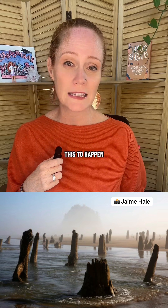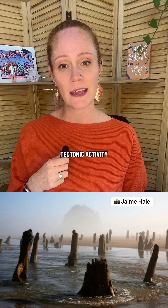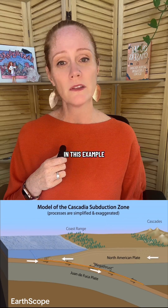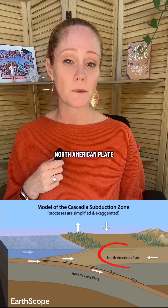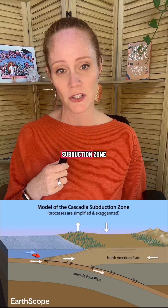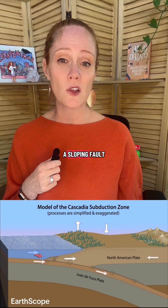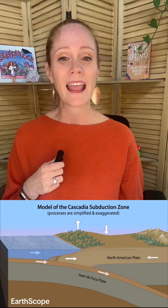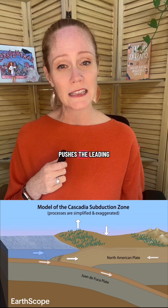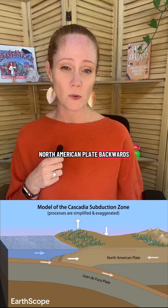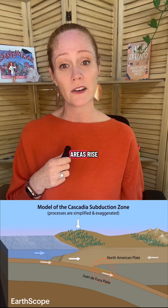But what causes this to happen? One cause is tectonic activity. In this example, the Juan de Fuca plate is sliding beneath the North American plate along the Cascadia subduction zone. The two plates are locked along a sloping fault called a megathrust. As the subducting Juan de Fuca plate pushes the leading edge of the North American plate backwards, the land is compressed and coastal areas rise.